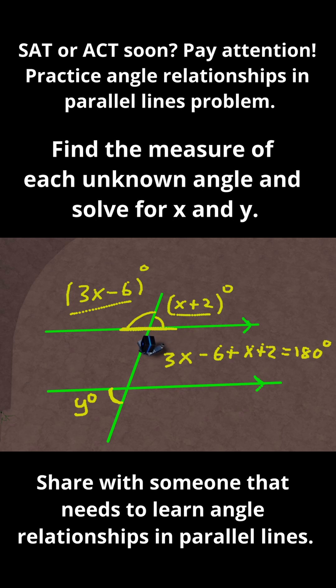And then if I condense this, 3x plus x is just 4x, minus 6 plus 2 is just minus 4. So I'm just going to have 4x minus 4 is equal to 180 degrees. Just add 4 to both sides. And now I'll have 4x is just equal to 184 degrees. So just divide by 4 to solve for x. And 184 divided by 4 is equal to 46. So x is equal to 46.